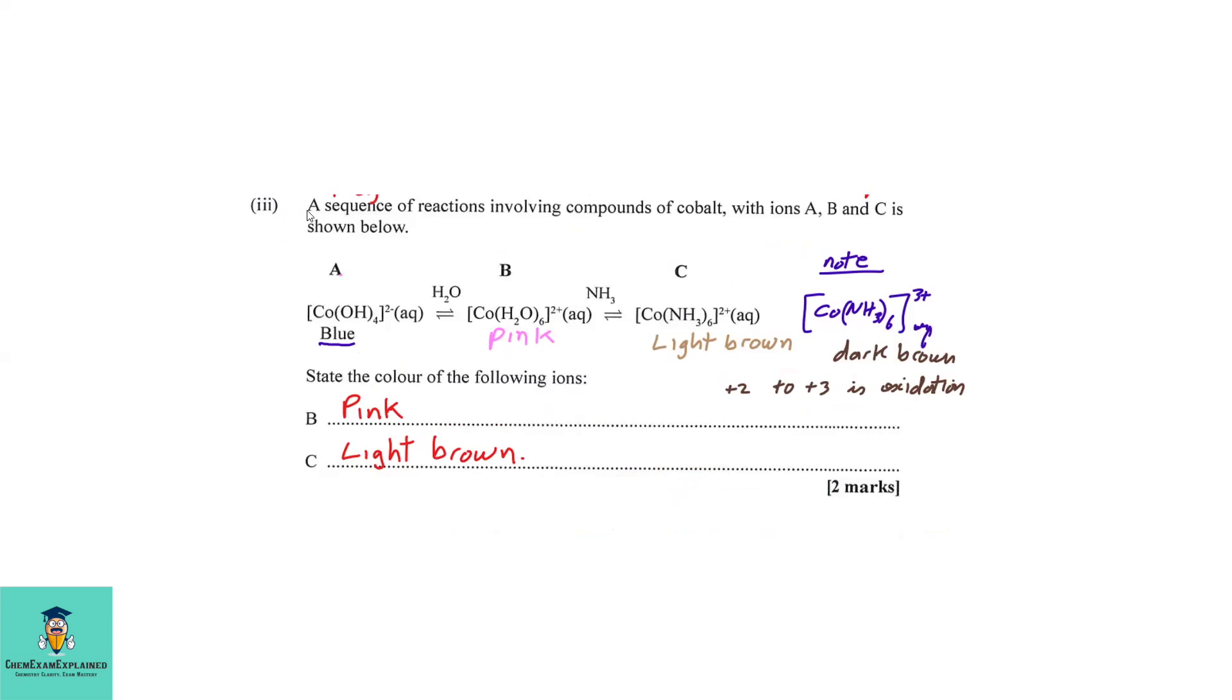D part three: A sequence of reactions involving compounds of cobalt with ions A, B, and C is shown below. So you'll see A, B, and C. State the color of the following ions. So here we have our blue tetrahydroxyl cobaltate two ions. And when water is added, we have ligand exchange taking place and will form hexa aqua cobalt 2+ ions, which is now pink. Another ligand exchange will take place when the ammonia will replace the water, forming a more stable complex. And that will now form hexa amine cobalt two ions.